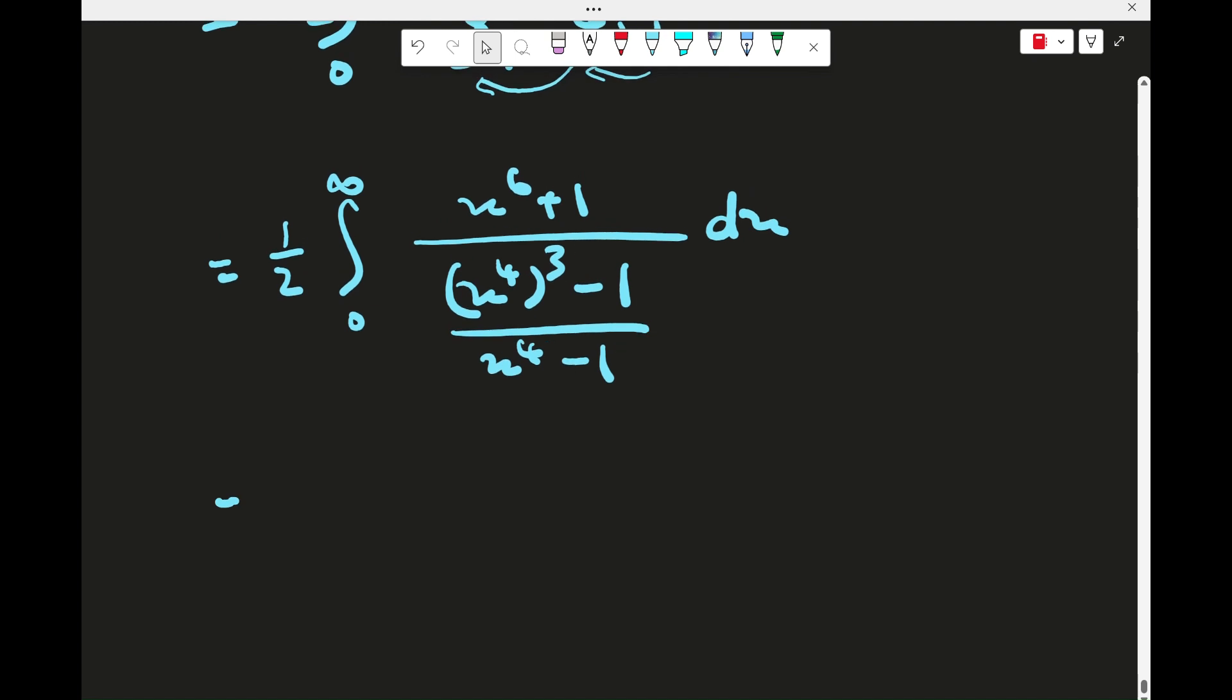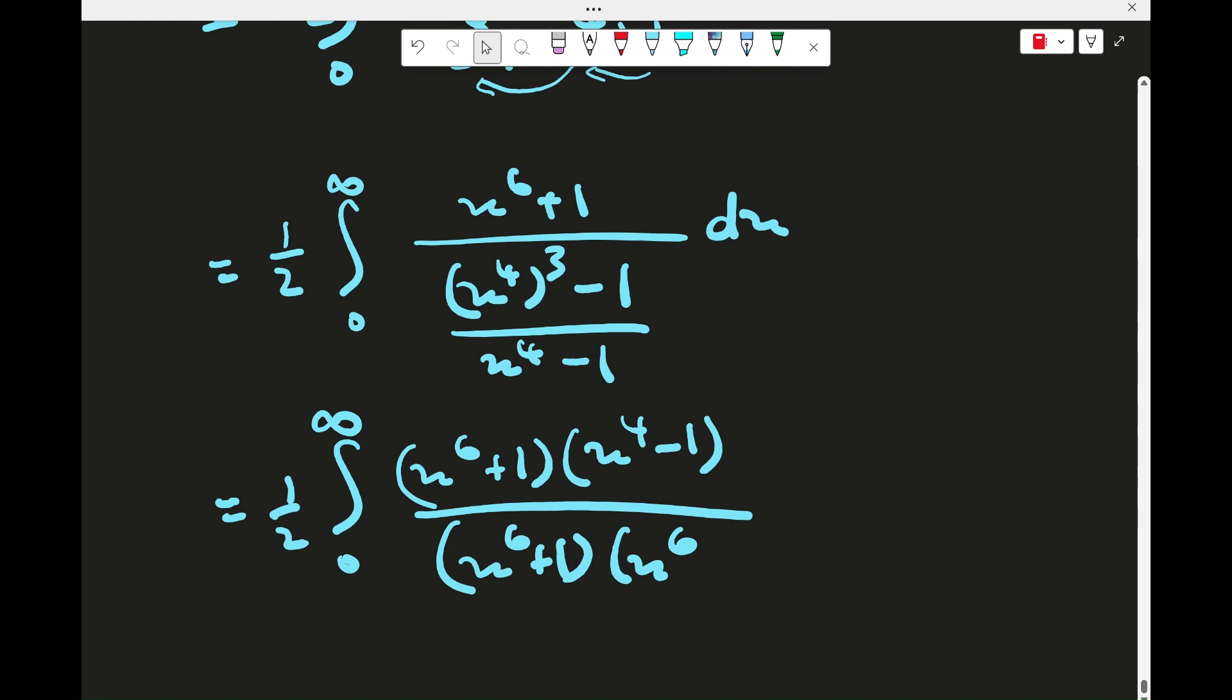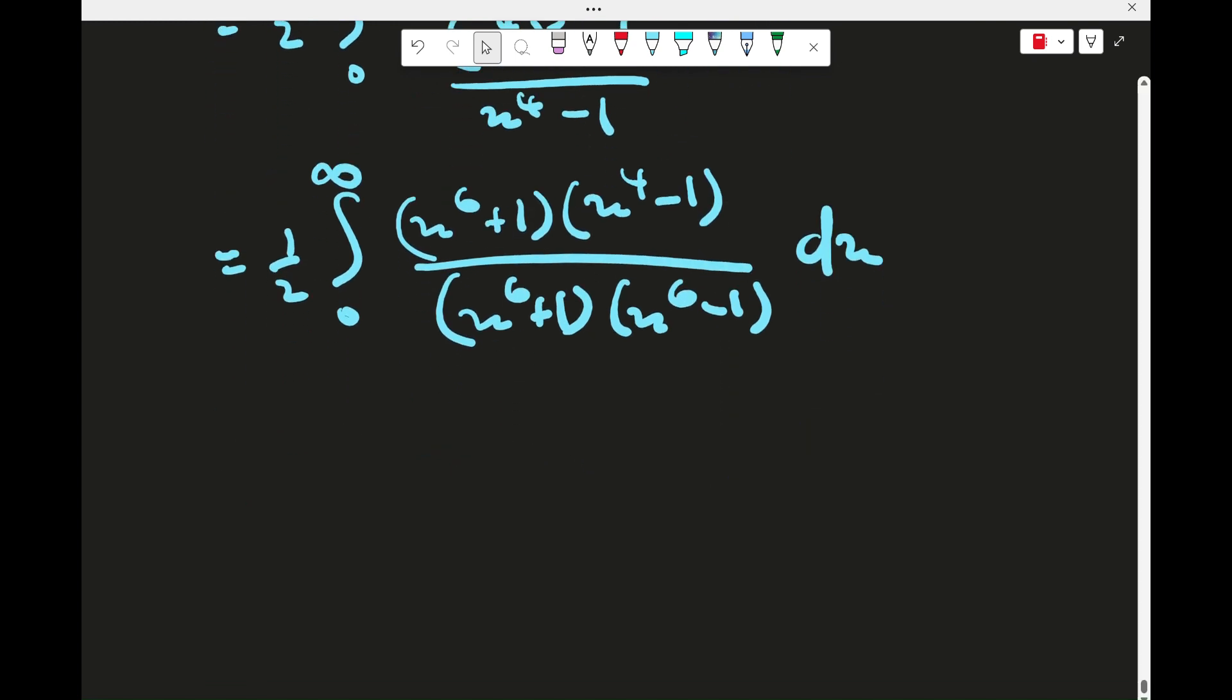And we can probably multiply by x to the 4 minus 1. And that would give us this, and then we have x to the 12 minus 1 on the bottom. But isn't that just x to the 6 plus 1, x to the 6 minus 1, because of difference of squares? Yeah, so that works.